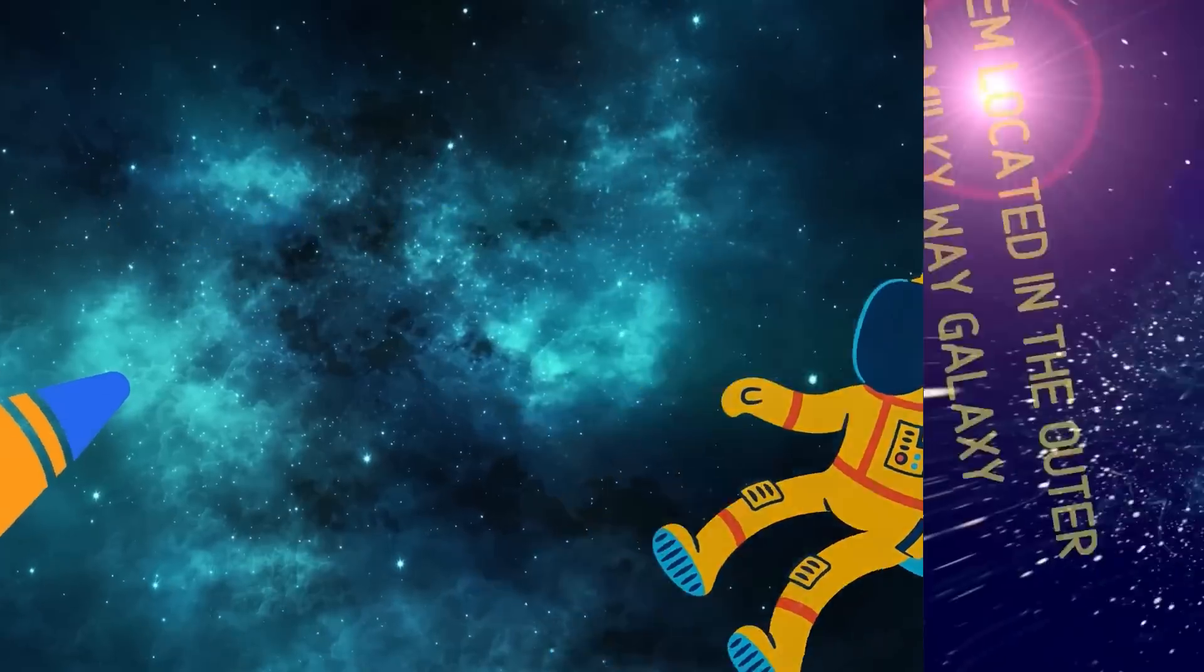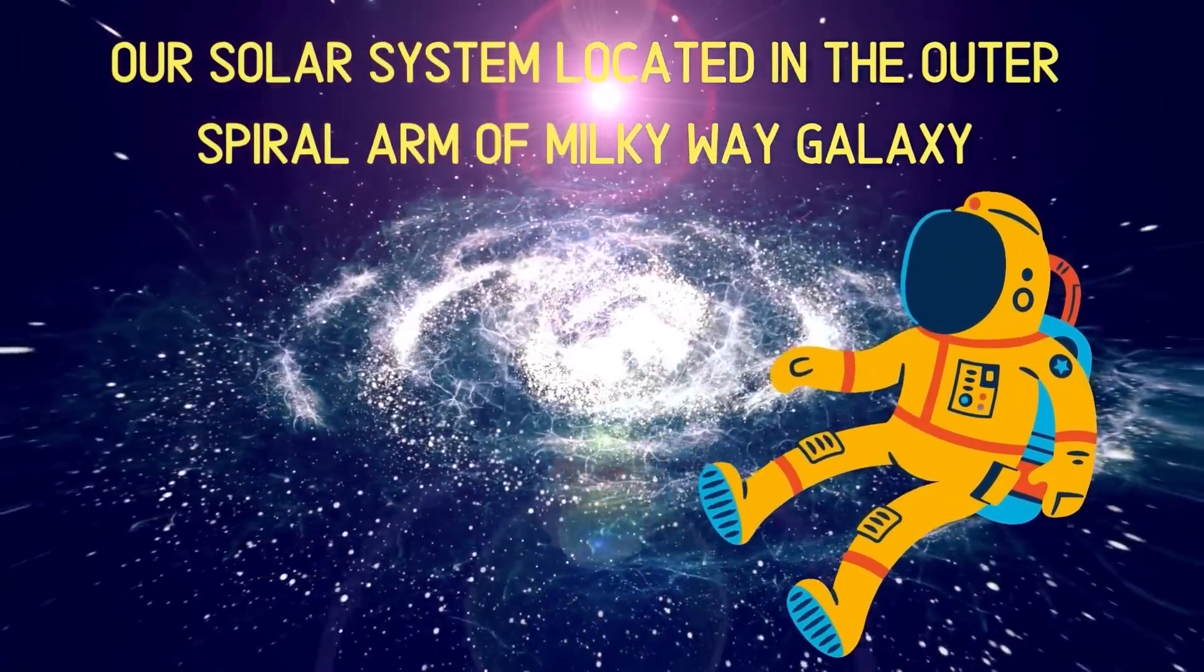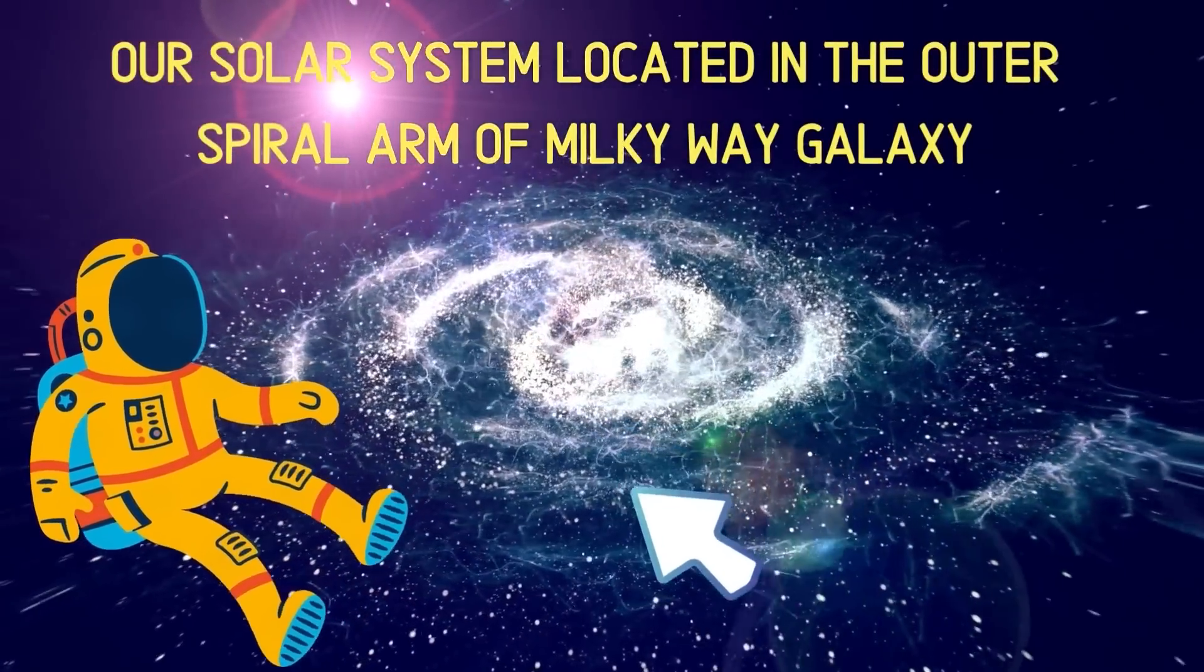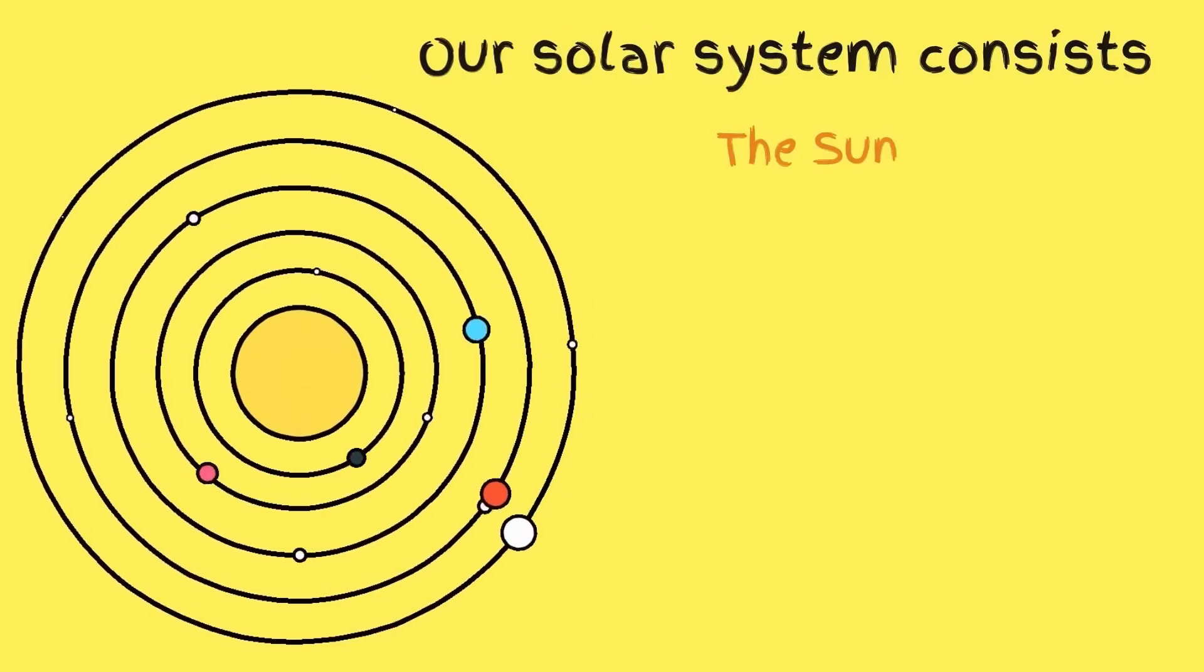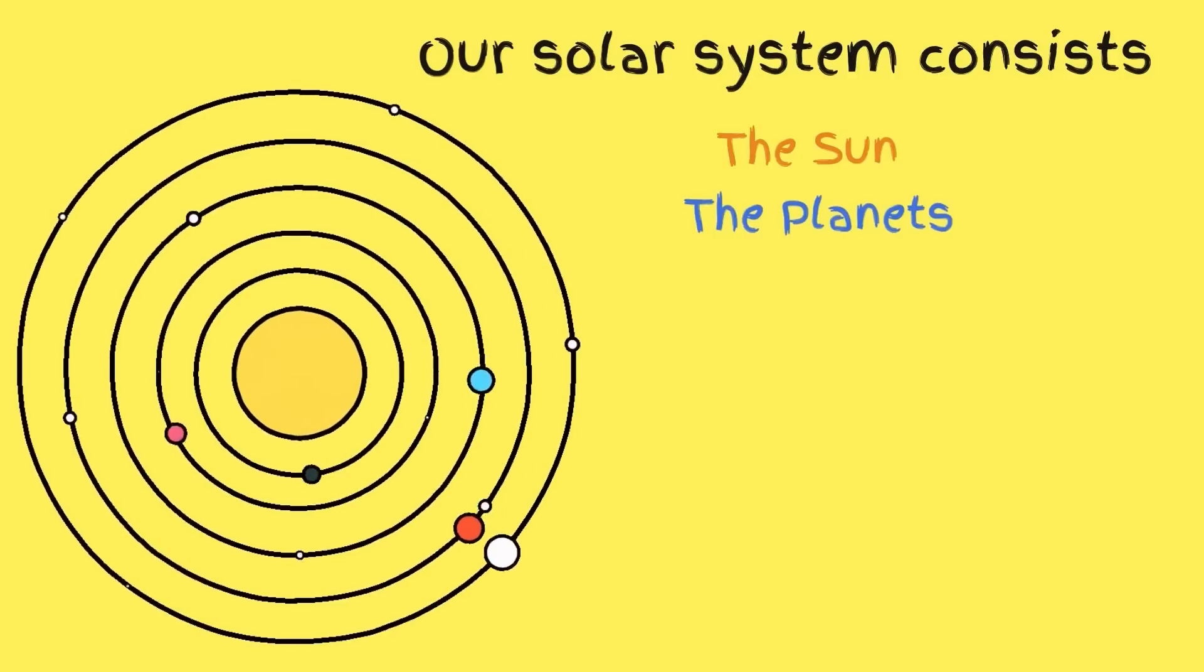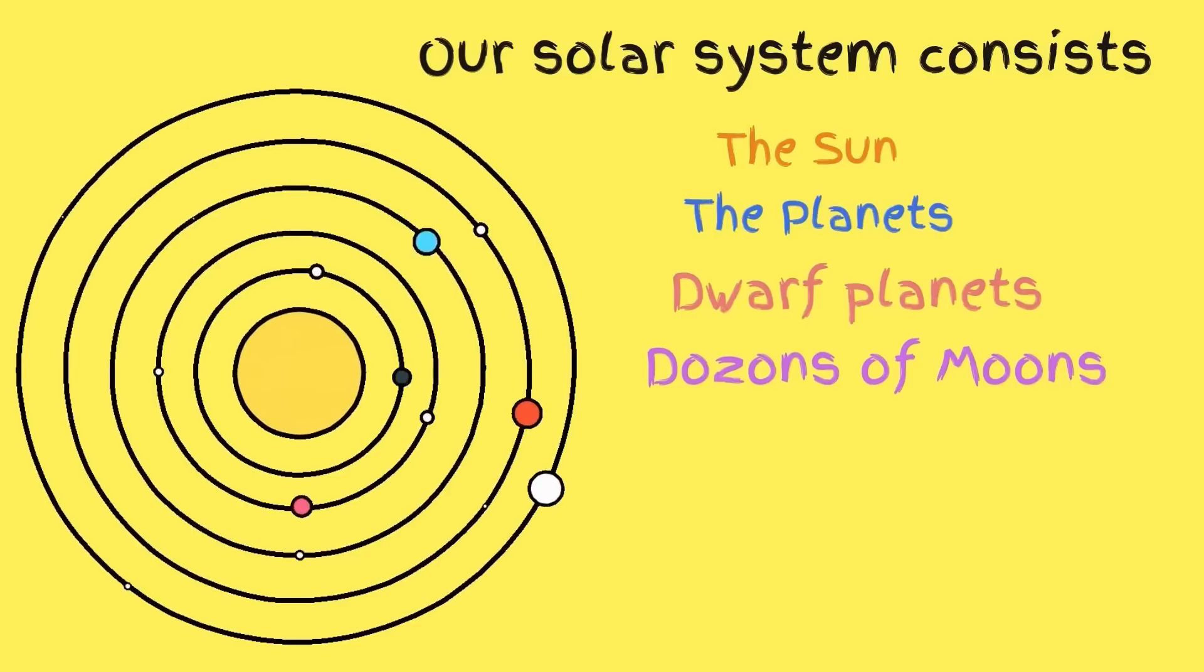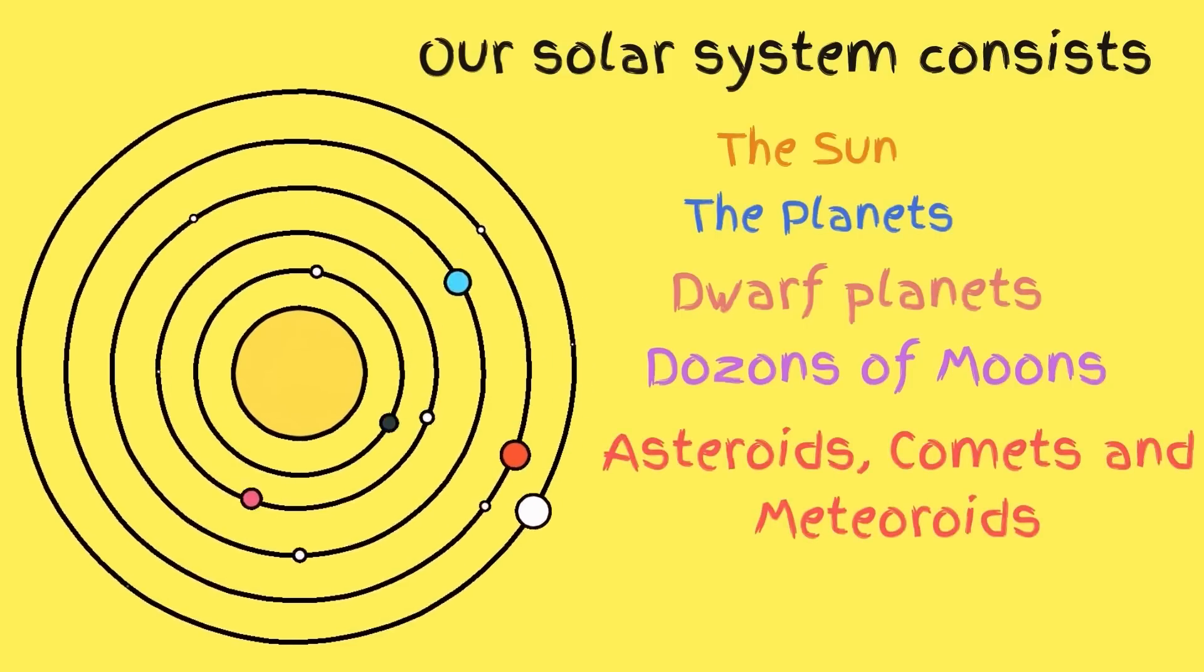Our solar system is located in the outer spiral arm of the Milky Way galaxy. Look, somewhere here. Our solar system has the sun, the planets, dwarf planets, dozens of moons, and millions of asteroids, comets, and meteoroids.